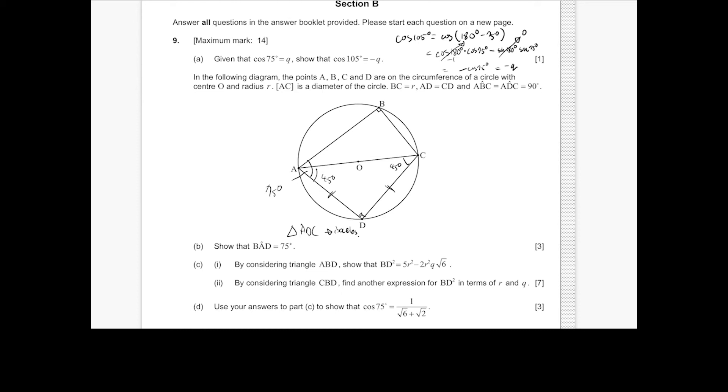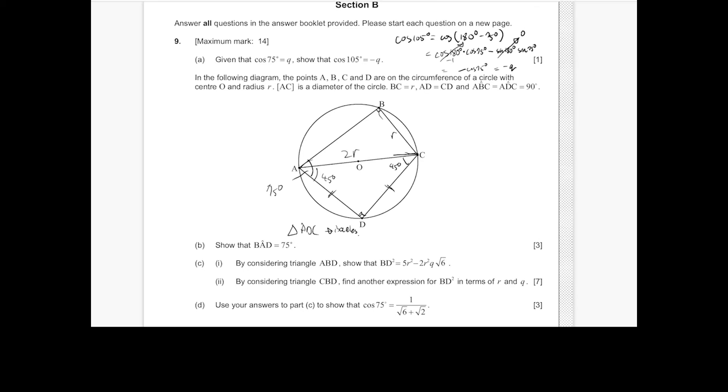And if you look at triangle BAC, we're given that BC is R, meanwhile AC is the diameter, so this is 2R. So this means that side AB is going to be 2R squared minus R squared, square root of that. So that's root 3R.